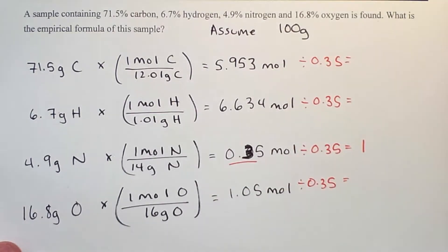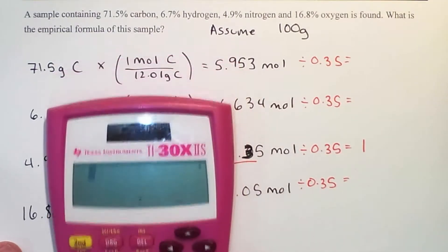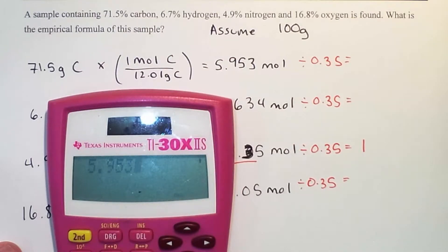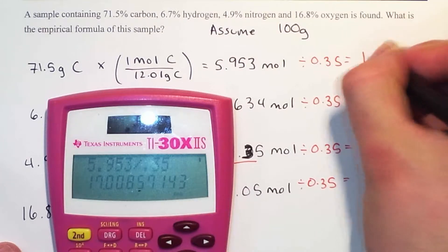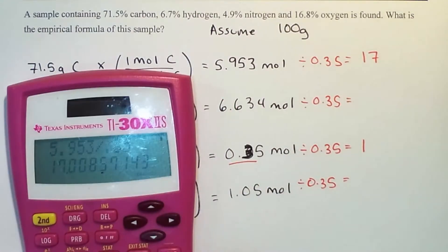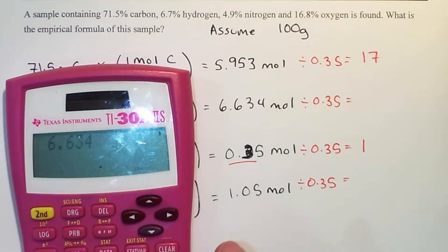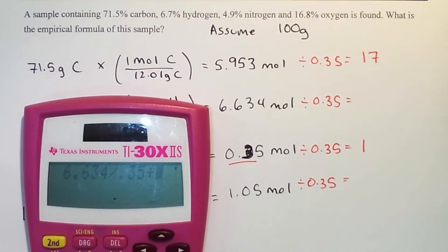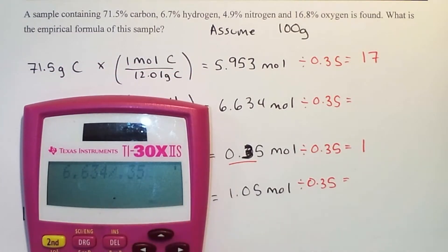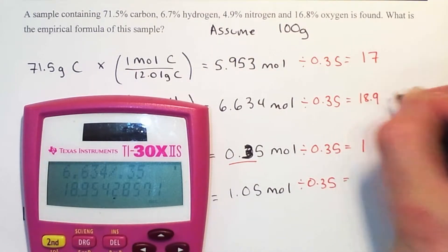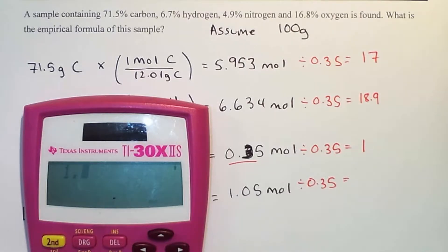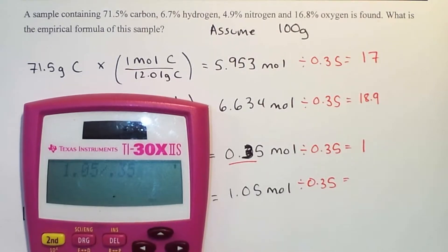Obviously that one is equal to 1. 5.953 divided by 0.35 is equal to 17. 6.634 divided by 0.35 is equal to 18.9, and 1.05 divided by 0.35 is equal to 3.